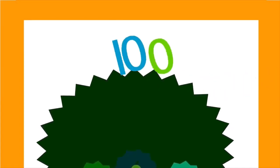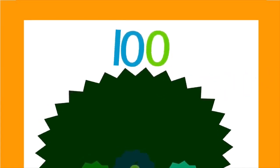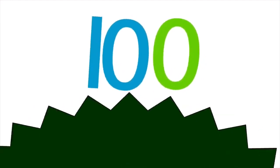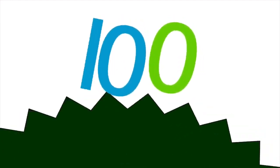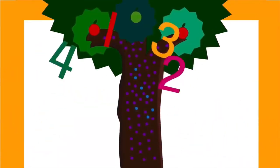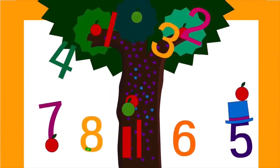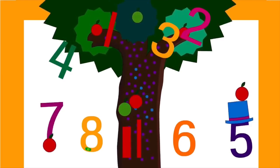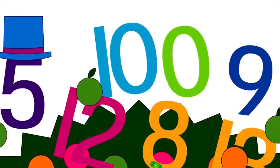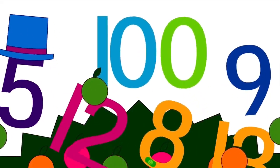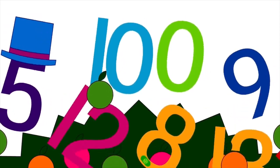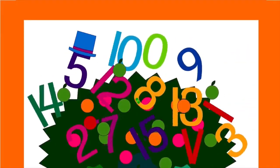Chicka chicka 1, 2, 3. 1, 2, 3. Chicka chicka 1, 2, 3. Here's the place that's just for me. All the numbers come back out, higher and higher as they shout. Chicka chicka 1, 2, 3. Zero's hero of the number tree.